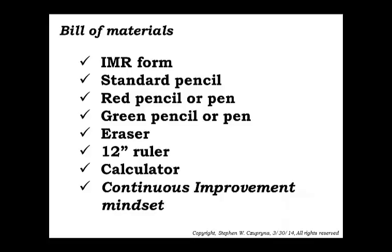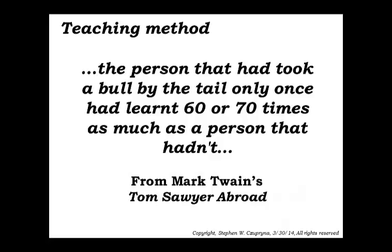Some colored pencils come in handy when you draw average lines and limits. The color helps people interpret things. Having an eraser, especially me, I make lots of mistakes. A ruler, a calculator, and most importantly, continuous improvement mindset. I used to use process behavior charts to try to prove a point or a pet theory. That is a horrendous mistake to make. Better is to look at this as a way to learn and keep an open mind.